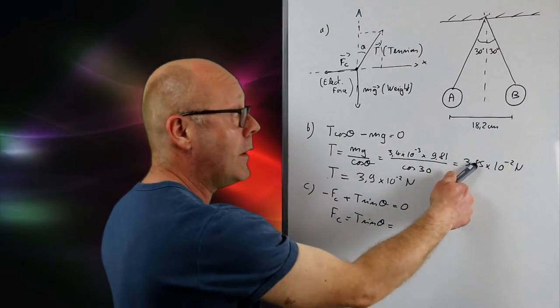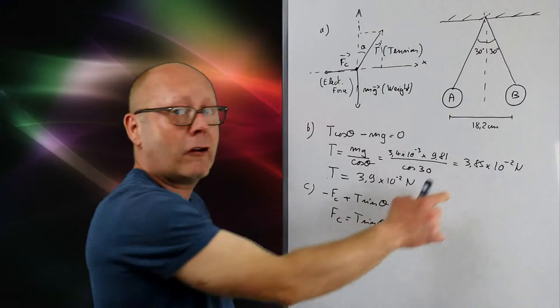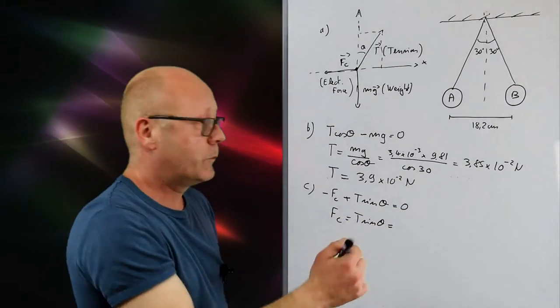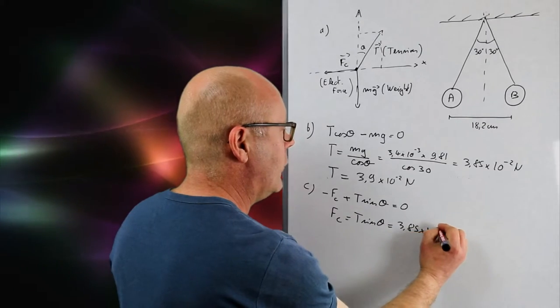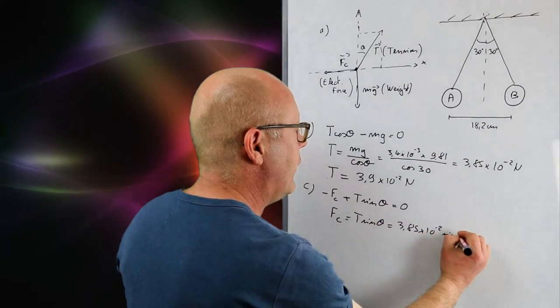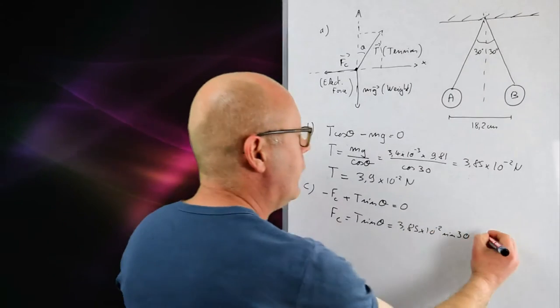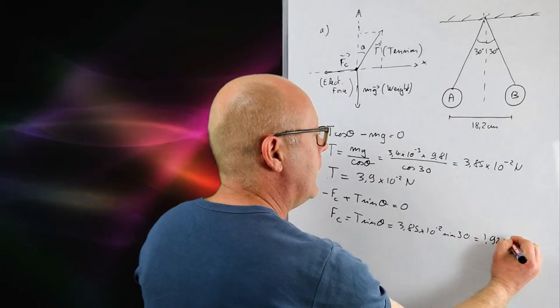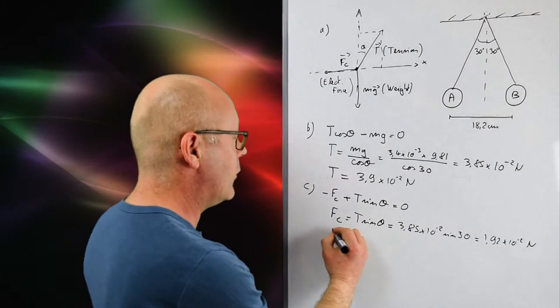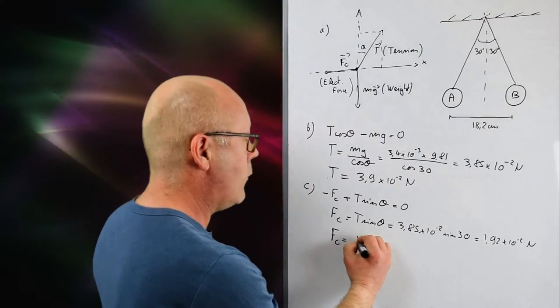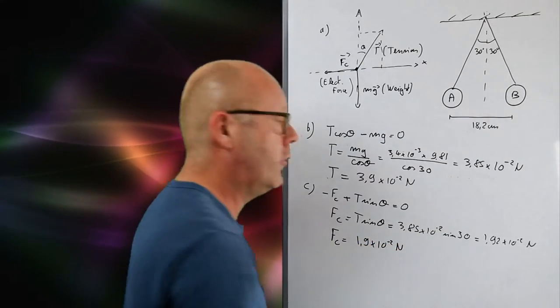I will use the number without rounding up here to do the calculation. 3.85 by 10 to the minus 2 sine 30. And that gives me 1.92 by 10 to the minus 2 newtons. So my final answer for the Coulomb force will be 1.9 by 10 to the minus 2 newtons.